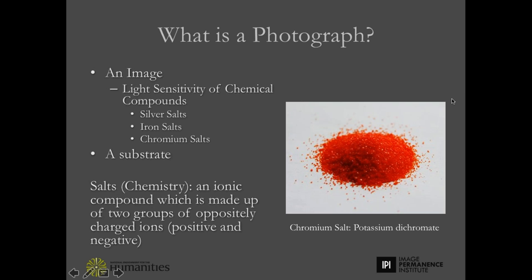So let's get started. What is a photograph? Photography comes from the Greek — it means writing with light. The notion of what a photograph is changes in the 21st century with digital technology, but for our purposes in discussing 19th century photographs, we'll keep it simple. A photograph is an image created through the use of light-sensitive chemical compounds, and that image is on a substrate.